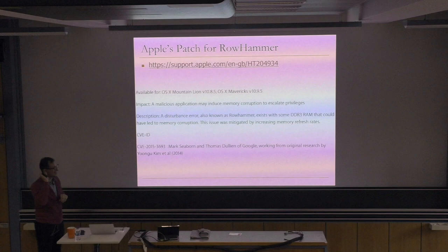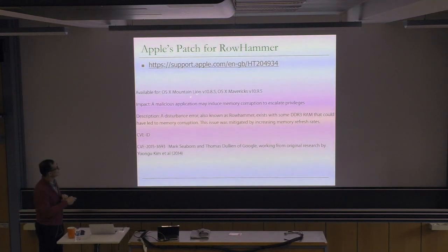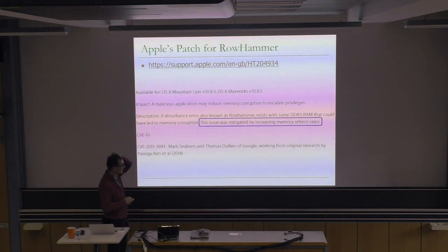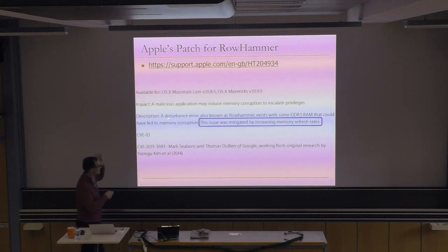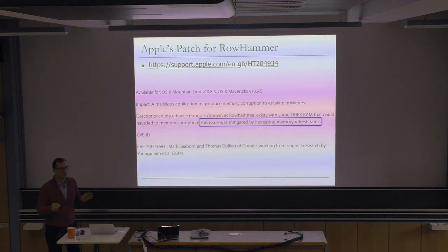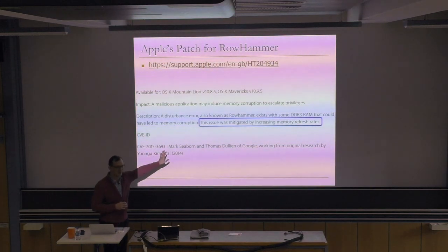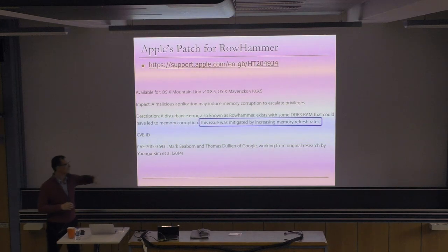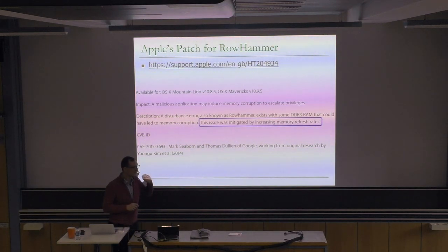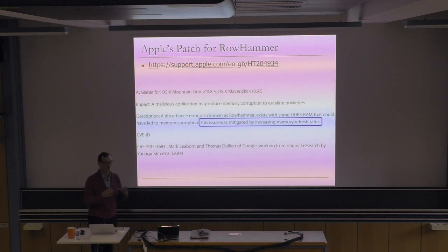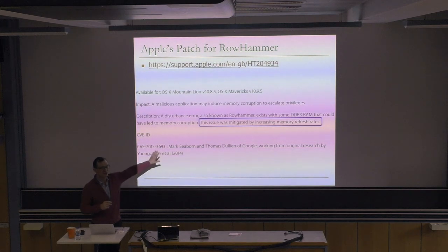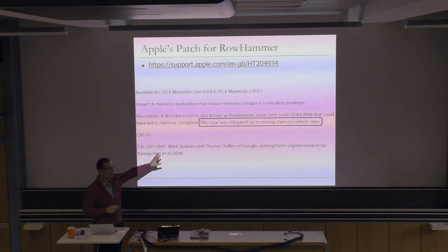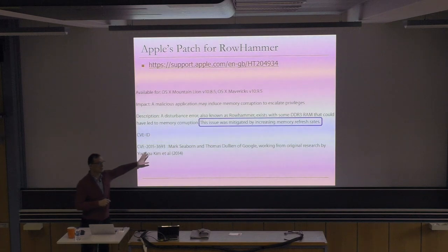This is Apple's security release — they acknowledge the problem and say they increased memory refresh rates to solve it, but don't say by how much. I believe it's about 2x. I don't think it's 4x — that would be a lot in terms of energy and performance overhead. 2x is still a lot because refresh wastes energy and performance. In our results, we showed you need to increase the refresh rate by 7x to get rid of every single error. And the best attack — Google's double-sided hammering — hammers a row sandwiched between two others, leading to a higher number of bit flips, which may actually increase the required refresh rate further.